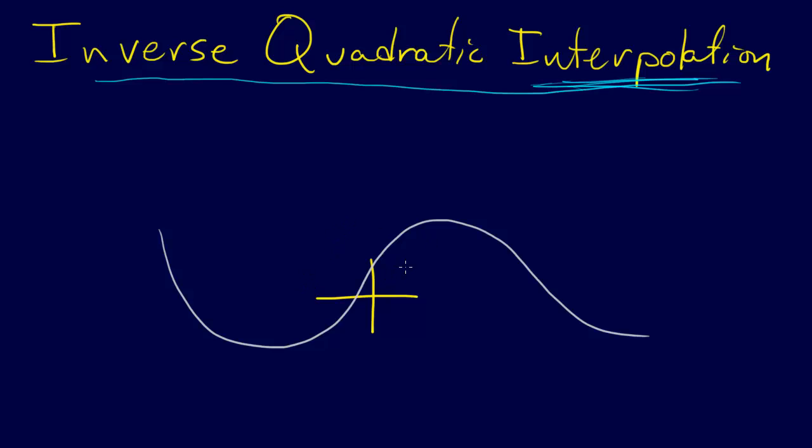And then, let's say we have a point, we're going to start our method, we're going to start out, and this is an open method. So this is an open method, so you start with one point. Alright, so you start with one point.